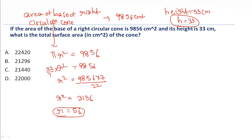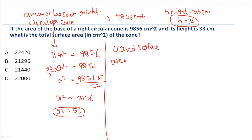Next, we have to find out the curved surface area of the right circular cone, because finding the curved surface area will help us find the total surface area of the cone. The formula for curved surface area of a right circular cone is πrl.